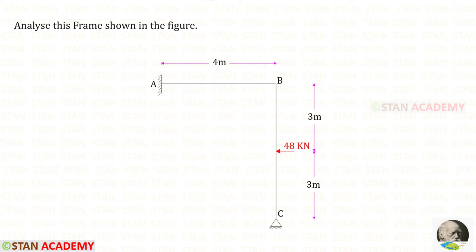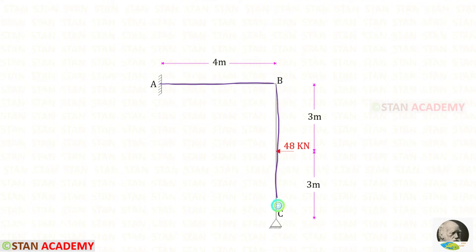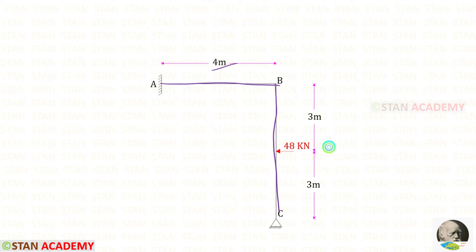Hello everyone. Today we are going to analyze this frame using the consistent deformation method. In this frame, there is a beam AB and a column BC. In the beam there is no load. In the column BC, we have a point load of 48 kN acting at the center. The length of AB is 4 m and the height of BC is 6 m.